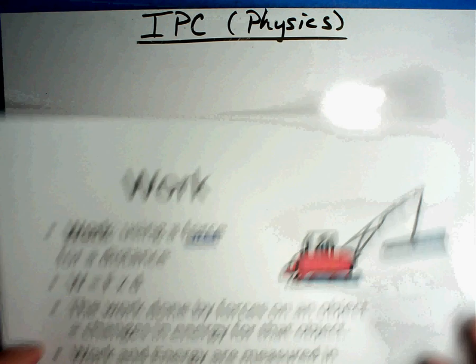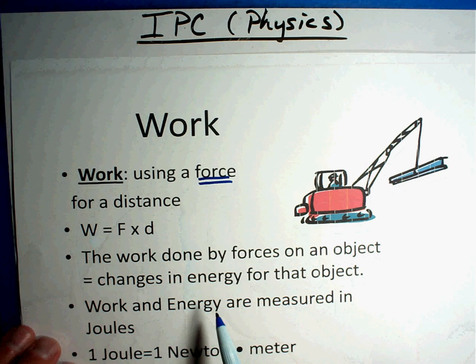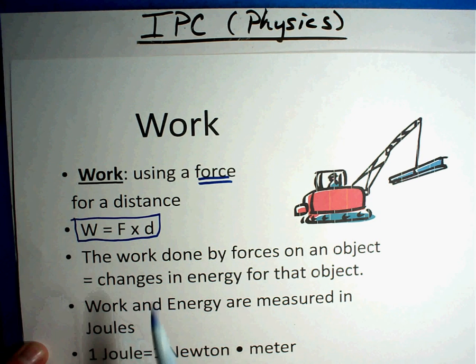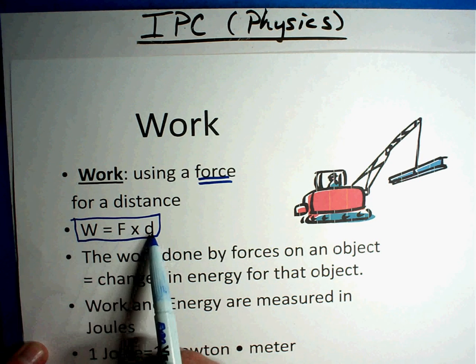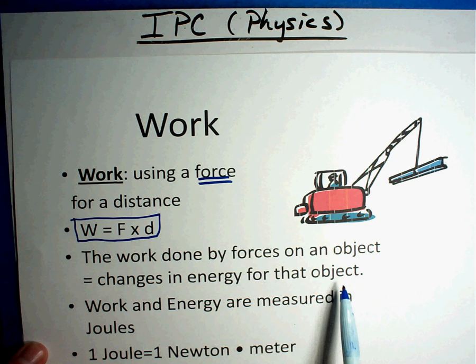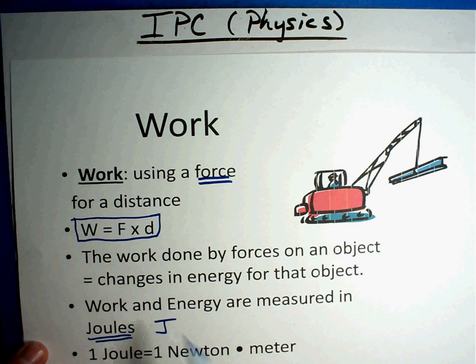Back to when we're talking about work. Notice it says using a force for a distance. So you're going to be pushing or pulling something for a certain distance. That gives us this formula. Work is equal to force times the distance. How far did you push it? The work done by forces on an object equals the change in energy for that object. So you're trying to push it. You're trying to fight friction as you're making something slide or rolling that boulder up the hill like you saw in that other picture.